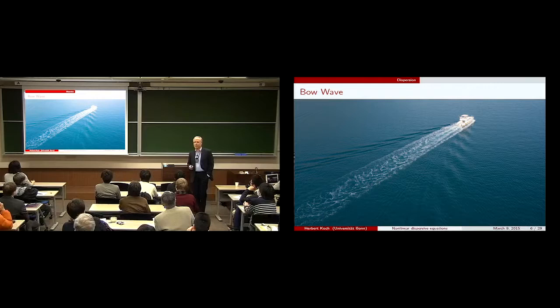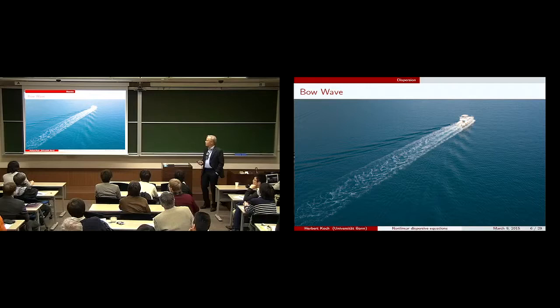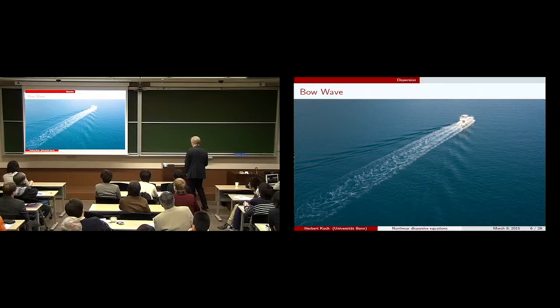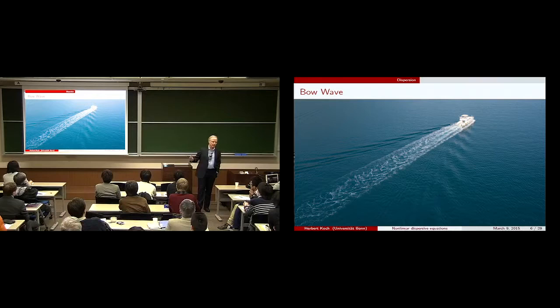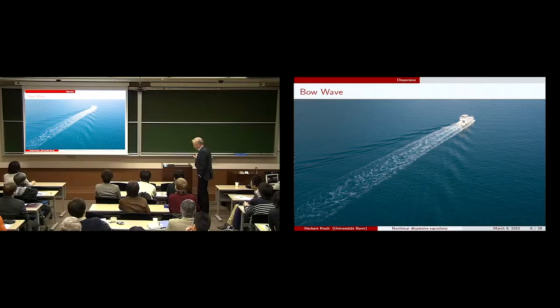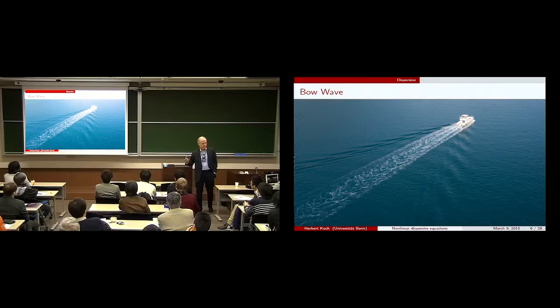What we see here is a ship which moves in the sea. This ship generates a wave, and to me it looks as if this wave would be mainly linear. It's probably a dispersive equation where the velocity of a wave depends on its frequency. This ship generates stronger waves of certain frequencies than others, and you see a frequency pattern and propagation in some direction.